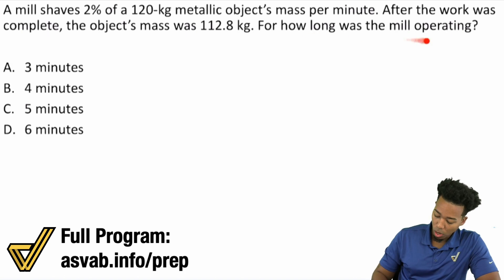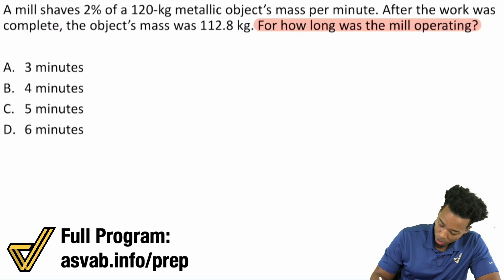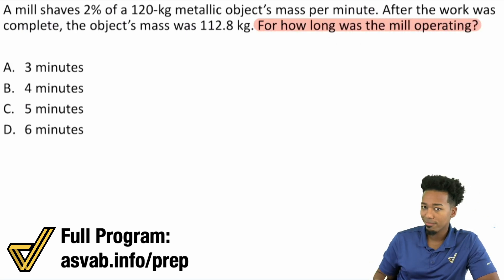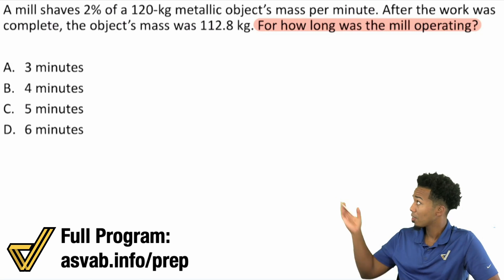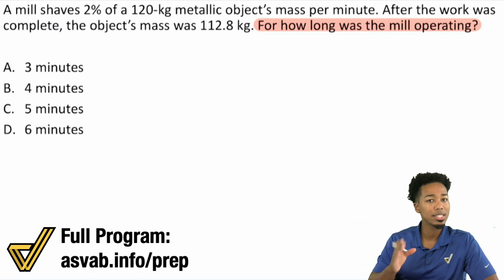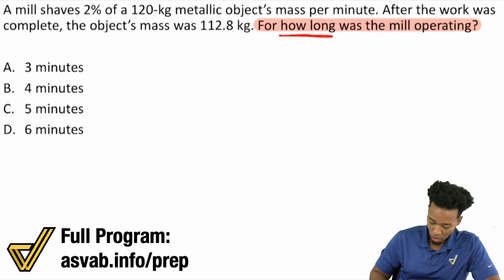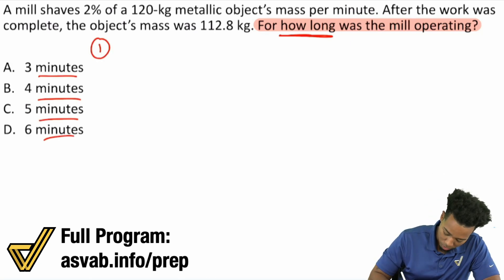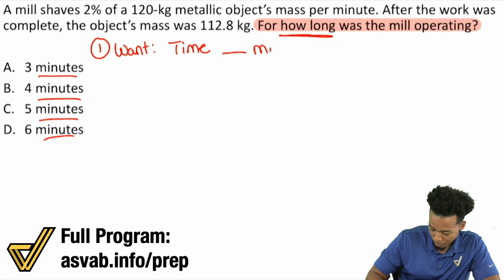Nothing else matters until you know what you're looking for. Then all the information is going to basically tell you what to do in terms of how to get to what you need. So here we go. Right over here it says, for how long was the mill operating? Okay, so first and foremost that's all I care about. For how long was the mill operating? And if you look at the answers, all of them say minutes. And so we can definitely tell here that for how long, well, we're looking at a time is what we're looking for. So basically right here, number one, what we want is time, blank minutes of operation. Okay, sounds good.